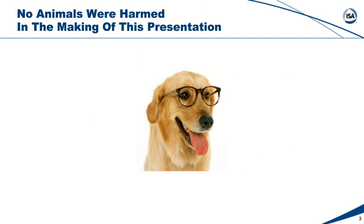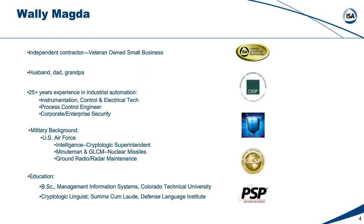No animals were harmed in the making of this presentation — that's my office assistant. As you saw in my bio, I have a background in control systems. The most important thing is that I have 25 years of experience. I started off as an instrumentation control tech, worked my way up to process control engineer, and had the fortunate experience of working in corporate and enterprise security with a four-service utility.